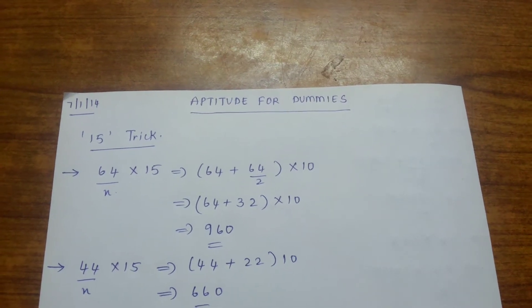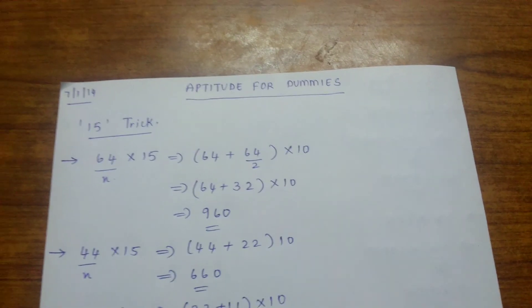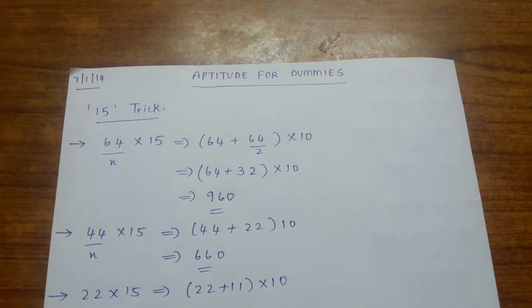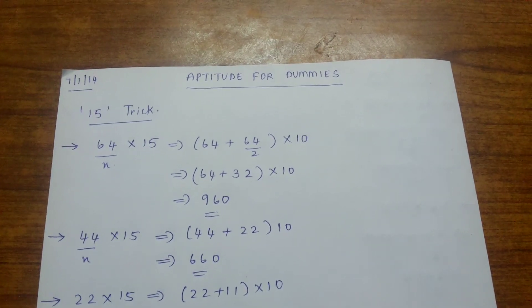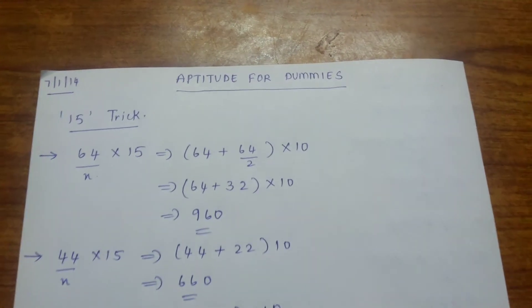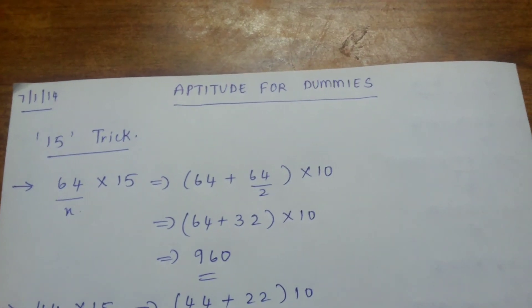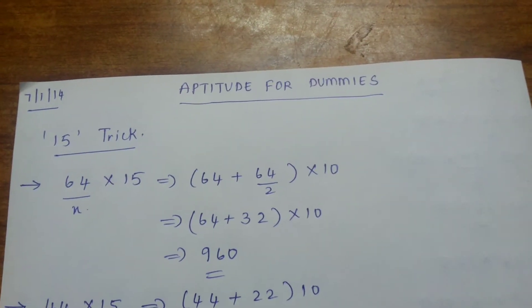Hi friends, welcome to aptitude for dummies. Today in this video I will teach you three tricks: the 15 trick, 25 trick, and 125 trick. Coming to the 15 trick, any number you multiply by 15...